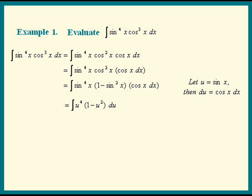So that's an easy integral. To integrate that, we multiply the terms out. We get u to the 4th minus u to the 6th. Next, we use the power rule for each term. We get u to the 5th divided by 5 minus u to the 7th divided by 7 plus c. And the last step is to substitute the sine x back in for u. And we're done.